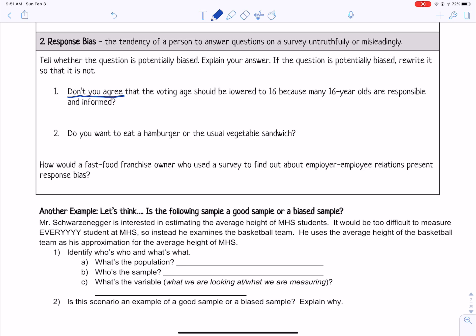And then 16-year-olds are responsible and informed is subjective and would cause people to maybe think that, even though they might not have thought that before. So I would change it to simply, should the voting age be lowered to 16? It takes away those parts that are biased.